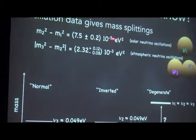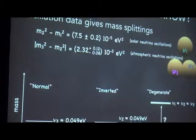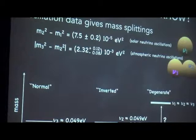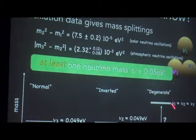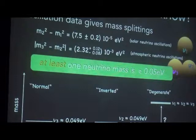We could also flip that around and have two states with very similar masses be more massive while m3 has approximately zero mass — this is called the inverted hierarchy, with two states at about 0.05 eV. Finally, if any neutrino mass is larger than about 0.1 eV, the mass splittings are tiny in comparison and this is called the degenerate hierarchy. From the cosmology side, the key point is that no matter how we arrange the masses, at least one state has a mass larger than about 0.05 eV.